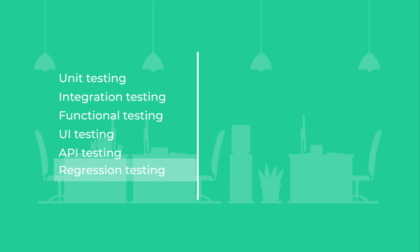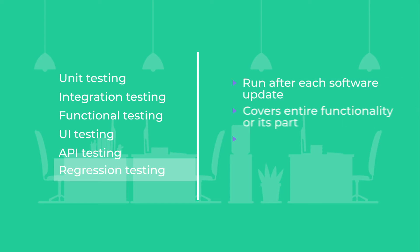Regression testing takes place before the release of a new product or its updated version. In other words, the team runs regression tests every time after altering the code. Being highly repetitive, the regression testing suite is the first in line for automation.